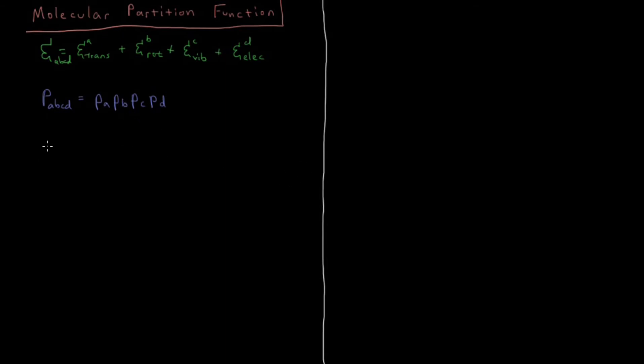Okay, so if we want to calculate the partition function of this particular system here, function of the volume of the system and temperature. Then that's going to be a sum over all four of these indices, a, b, c, d, and sum of their Boltzmann factors, e to the minus beta.